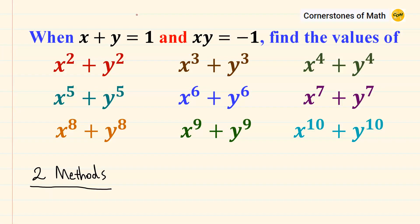Hello, and welcome to yet another video of Cornerstones of Math. Today, we are going to solve the following problem in two ways. When x plus y equals 1 and xy equals minus 1, find the values of x squared plus y squared, x cubed plus y cubed, x to the power of 4 plus y to the power of 4, all the way up to x to the power of 10 plus y to the power of 10. There can be more than two methods to solve this problem, but I will just present the two most famous methods.